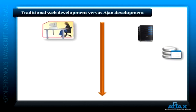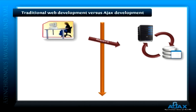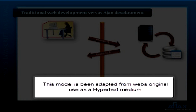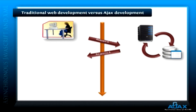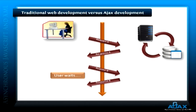In the classic web application model, the user's action in the interface triggers an HTTP request to a web server. The server processes this request — for example, it retrieves data from the database if needed, talks to various legacy systems, and finally returns an HTML page to the client. This model has been adapted from the web's original use as a hypertext medium, but it doesn't make for good user experiences because the user has to wait at every step in a task. This is the drawback of the classic method.